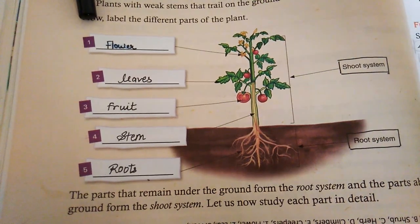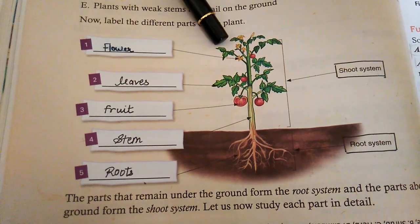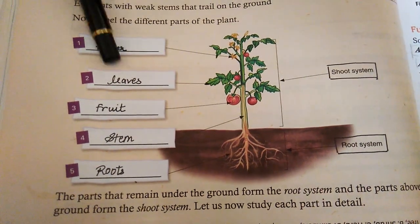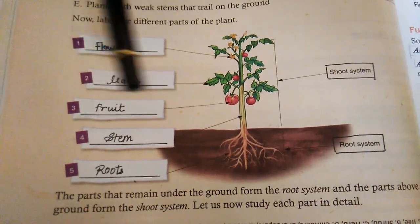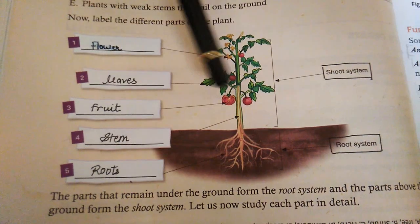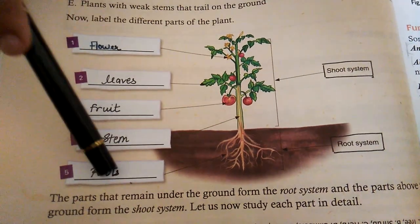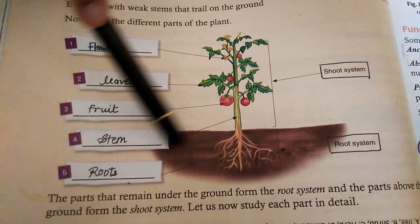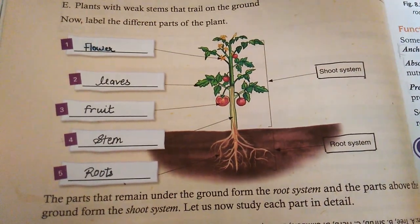Let's see the parts of a plant. These are the flowers, these are the leaves, these are the fruits, this is the stem, and these are the roots of this plant.